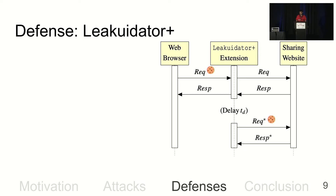Liquidator Plus is an improvement on prior work called Liquidator. It intercepts all HTTP requests and looks specifically at requests made cross-site to embed other resources. It strips cookies from the cross-site request and sends the response back to the page. But since we need cookies for some legitimate functionality such as tracking and analytics, the extension makes a second request identical to the first, this time with cookies. However, the second response is not rendered in the browser.